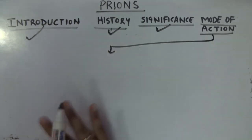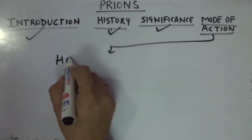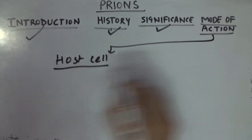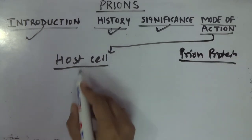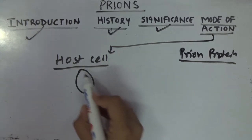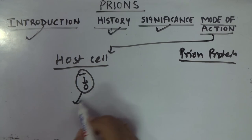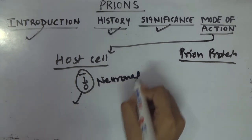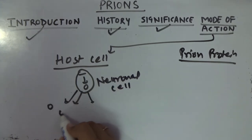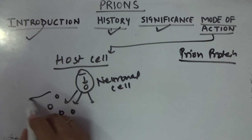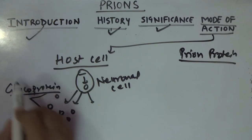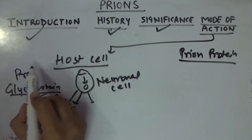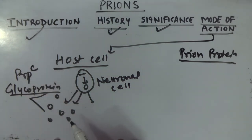In mode of action, we will learn in two parts: the host cell and the prion protein. The host neuronal cell, under normal conditions, produces a protein — a glycoprotein. We use the term PrPC for these proteins. PrPC proteins are produced by the neuronal cells of the host under normal conditions.